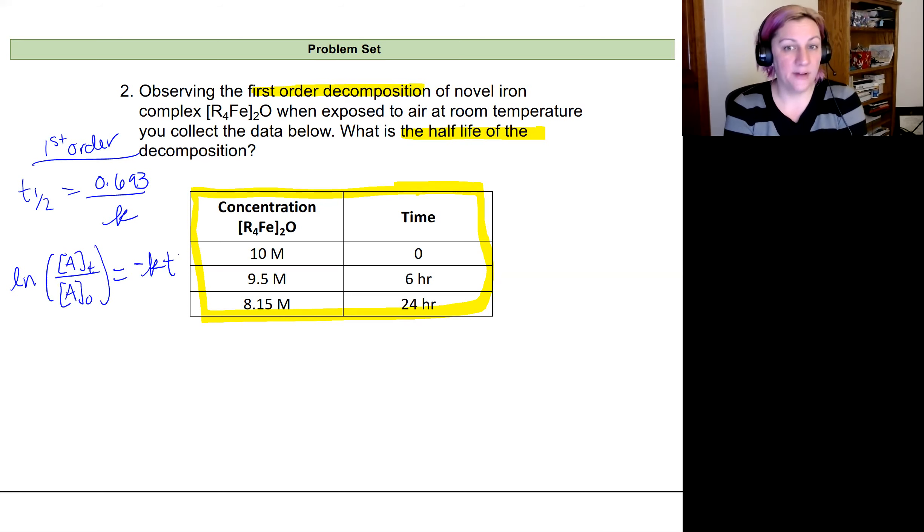So I can find this half-life right here. If I want to find the half-life, it's this, but I'm going to need K to do that. And I don't have K yet, but I can find K from my integrated rate law. So that's what I'm going to do. I'm going to first find K and then I'll find T1 half.